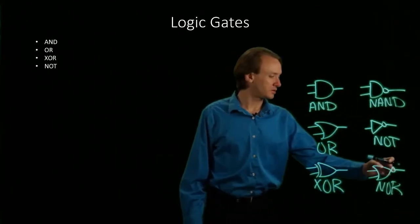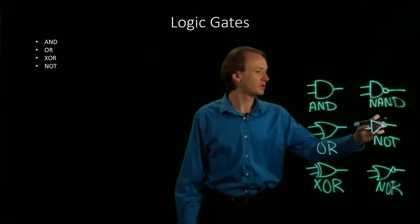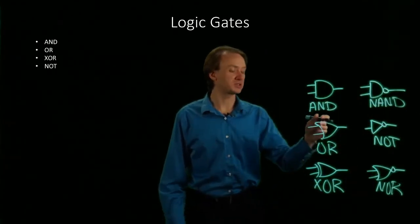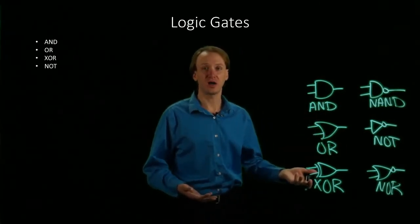And the circle will represent the NOT, while the rest of the thing represents the basic gate that we've got here.